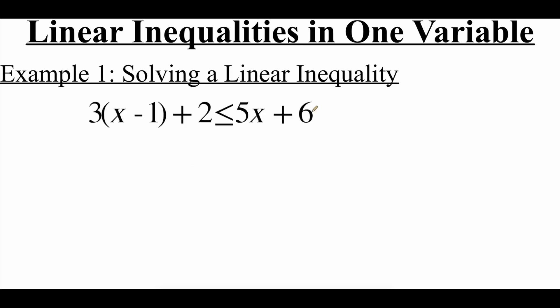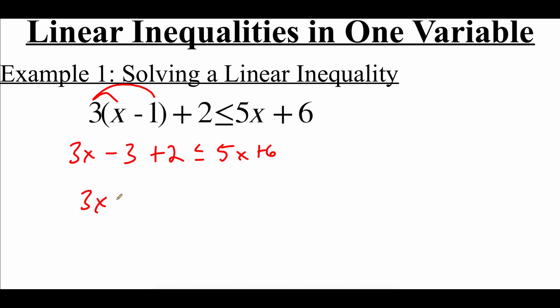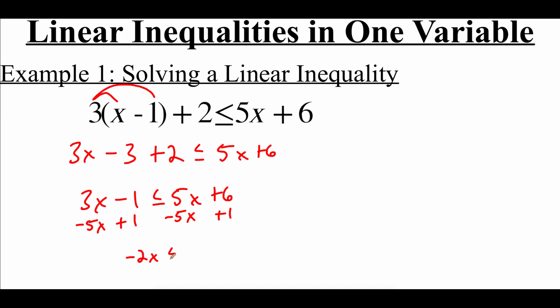In this example we're going to look at solving a linear inequality. We've got three times (x minus one) plus two is less than or equal to five x plus six. First, on the left-hand side I'll apply the distributive property: three times x is 3x, three times negative one is negative three, then plus two, all less than or equal to five x plus six. Combining like terms on the left, negative three and positive two gives us 3x minus one is less than or equal to 5x plus six. Adding one to each side and subtracting 5x from each side leaves us with negative 2x is less than or equal to seven.